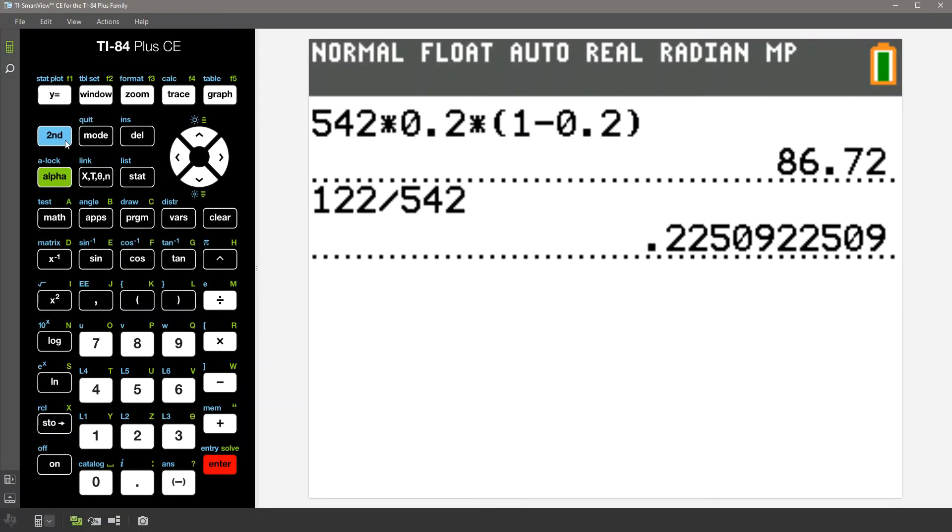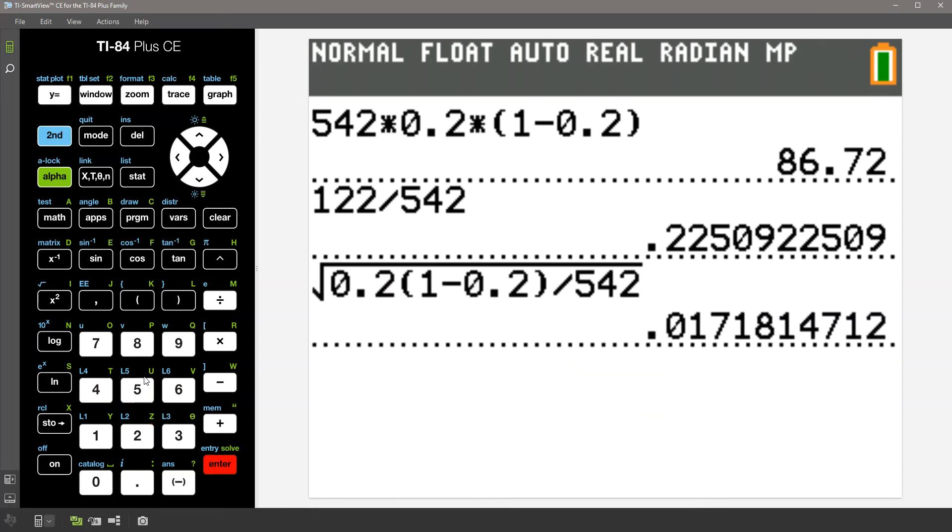So let me go grab the calculator. I'm gonna hit second square root, and then I want P₀, which is 0.2, times (1 - P₀), which is (1 - 0.2). You don't need the times symbol in there. The multiplication or the parentheses will take care of the multiplication. I'm going to divide it by 542 and sure enough I get 0.01718.